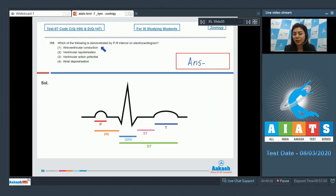Question 169: Which of the following is demonstrated by PR interval on electrocardiogram? Atrioventricular conduction, ventricular repolarization, ventricular action potential, or atrial depolarization.